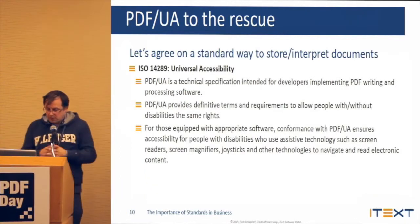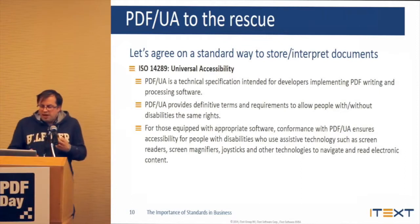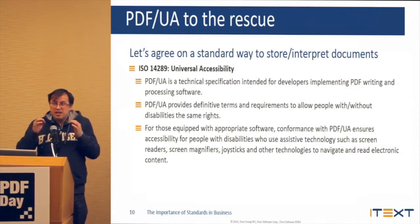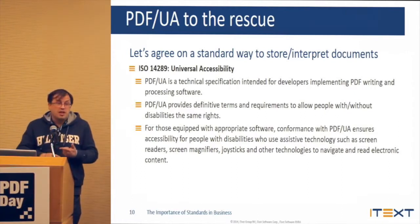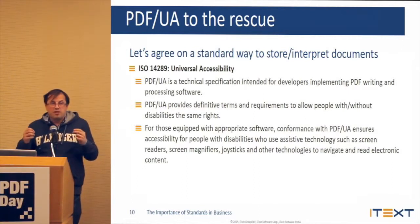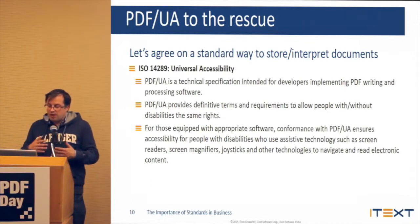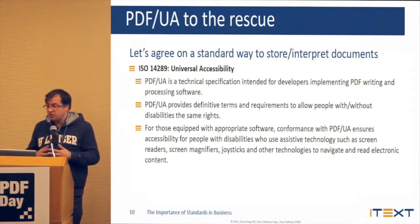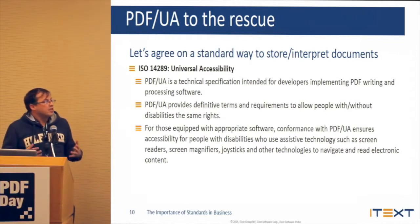So the first standard I wanted to talk about is PDF-UA — PDF-UA to the rescue. Let's agree on a standard way to store and interpret documents. PDF-UA is a technical specification intended for developers implementing writing and processing software. When we write software, we are unambiguously going to say this is how the document needs to be interpreted. It provides definitive terms and requirements to allow people with or without disabilities the same rights. Whoever reads this document — if it's a machine, if it's a person who can see or can't see — they should interpret the document the same way and get the same information. If you have the appropriate software, then conformance with PDF-UA ensures accessibility for people with disabilities who use assistive technology such as screen readers, screen magnifiers, joysticks, and other technologies. In a nutshell, that's what PDF-UA is about: making our documents in a way that they are accessible.